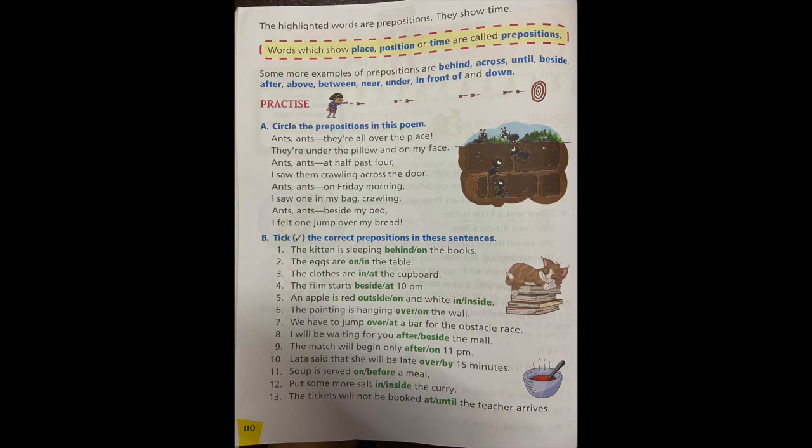So these words are the prepositions. Even when exactly it is showing about the time, at, on, these words are also prepositions. Now look at section B: tick the correct prepositions in these sentences. There are two, we have to tick the right one.